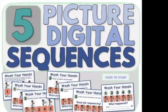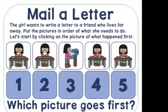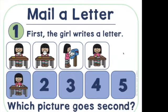Let's look at the five-picture digital sequence. So you can click here, and we can talk about things that people do in the order in which they do them. So what's the first thing you need to do when you are writing a letter? Well, you first need to write that letter, and that's number one. First, the girl writes a letter.